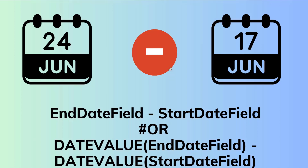The syntax for this is: either you subtract the end date from the start date, or you use the DATE VALUE function to get the end date value and the start date value and subtract them as per your choice. Now let's see how to get the number of days between two dates in Salesforce Lightning with the help of an example.